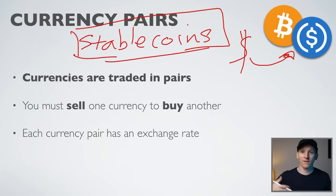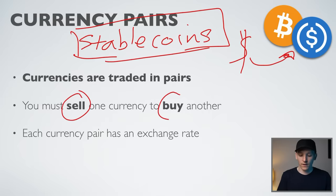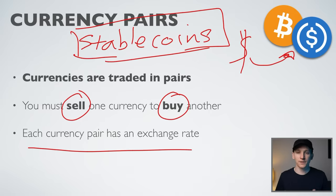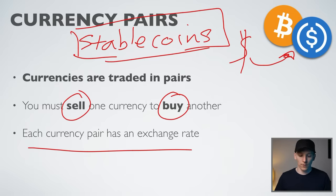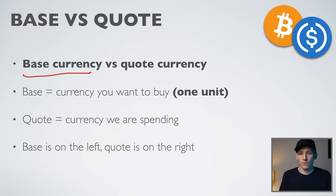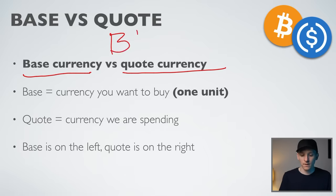If you want to buy Bitcoin, you have to sell another currency — most people convert their dollars into USDC or USDT or Binance USD. Each currency has an exchange rate, just like exchanging money on holiday. When you say a stock is worth $100, what you mean is it takes $100 to get one share — the exchange rate is 100:1. We have the base currency and the quote currency: the base is on the left (the one you want to buy), the quote is on the right.